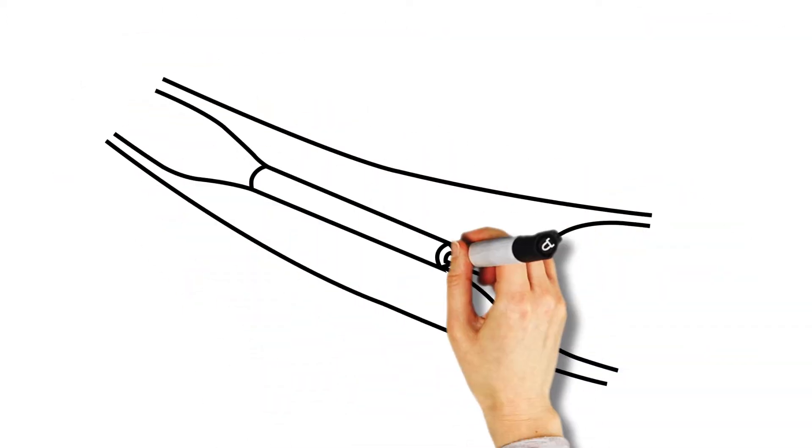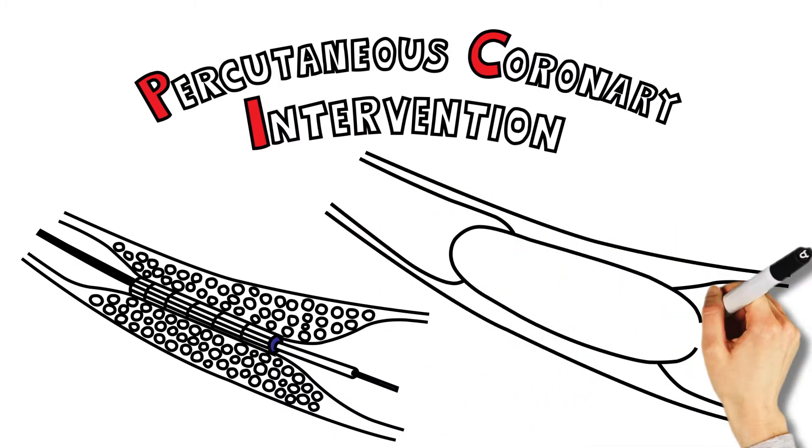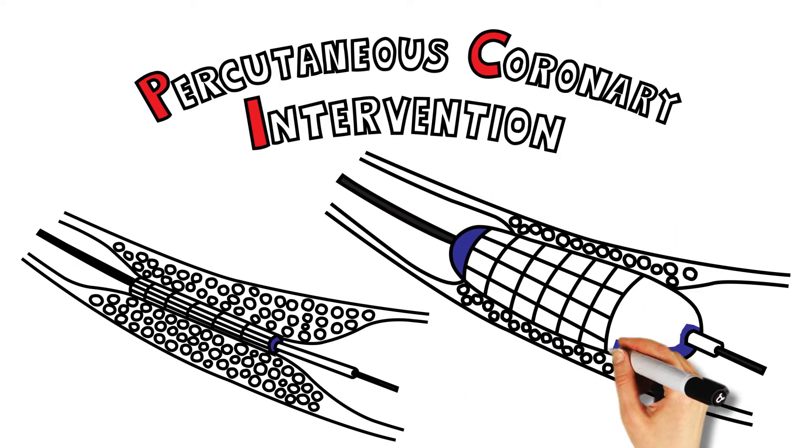During this procedure, a balloon opens the narrowing and one or more stents are inserted to keep the artery or arteries open, restoring blood flow over the long term.